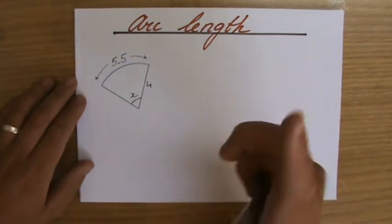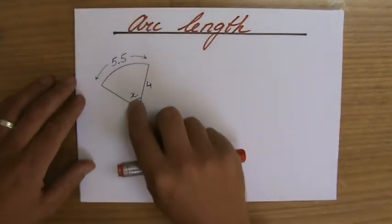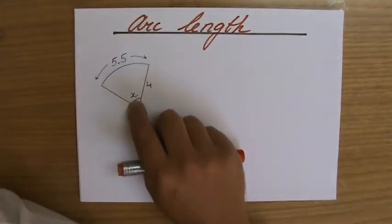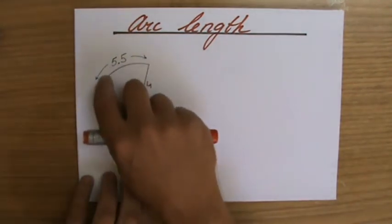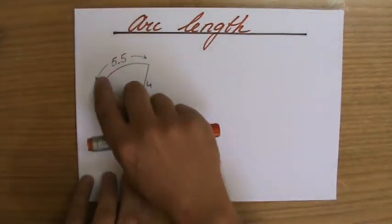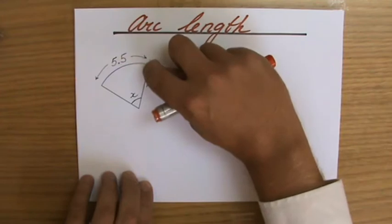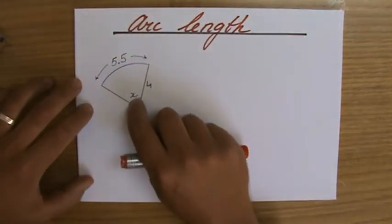This angle is what? 75, 80, 85 degrees? A little bit less than 90 anyway. They give me the arc length, 5.5, and they give me a radius, 4. And our question is, what is that angle x?